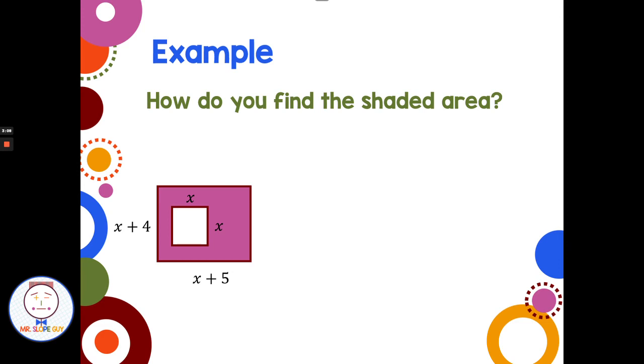They look very familiar because we just found the area of a rectangle with length of x plus 4 and width of x plus 5. And we found the area of a square with a side of x. How do I find the pink area? What I want to do is take the area of the large rectangle.